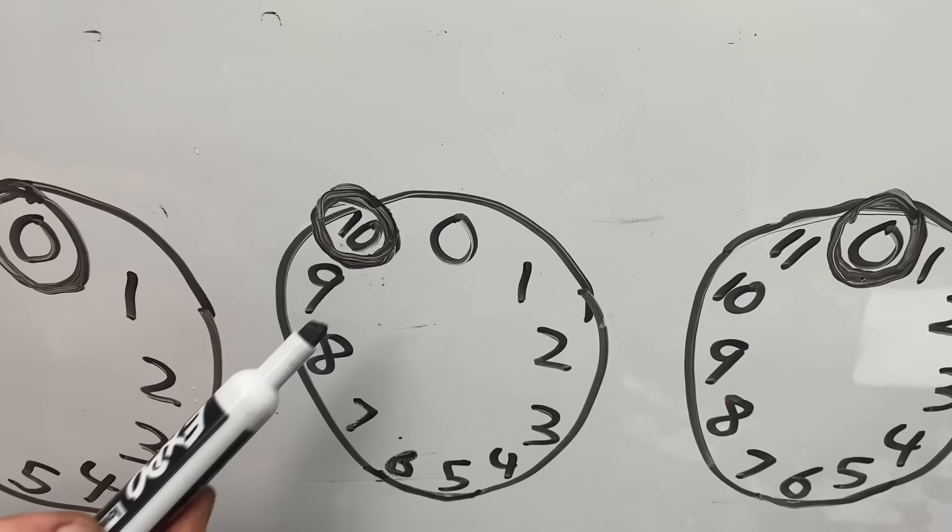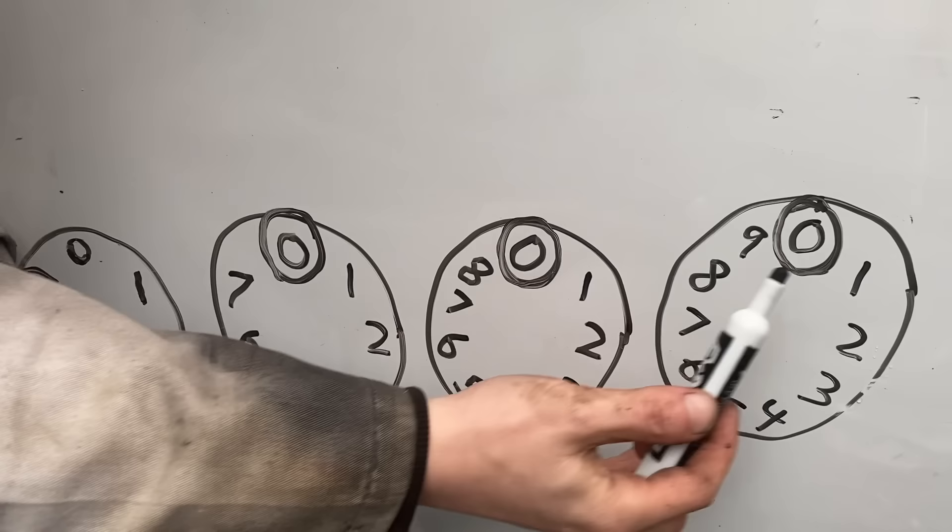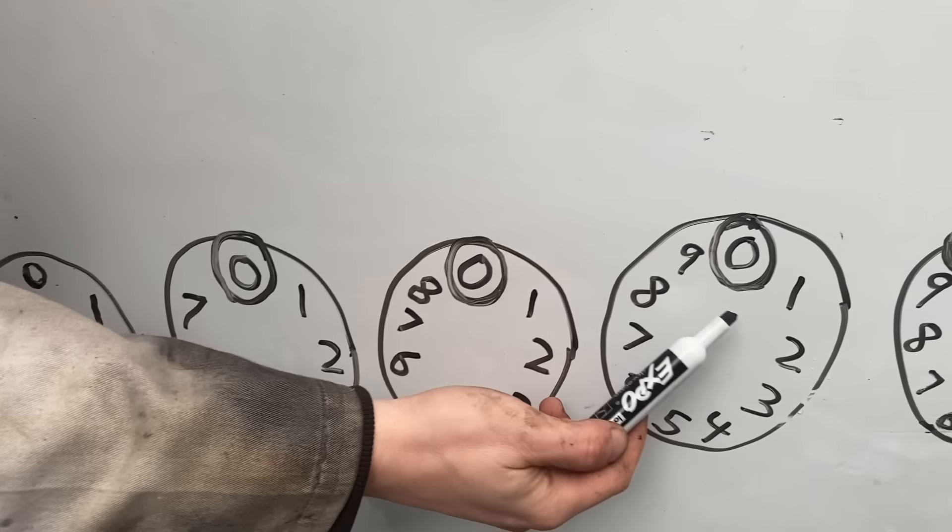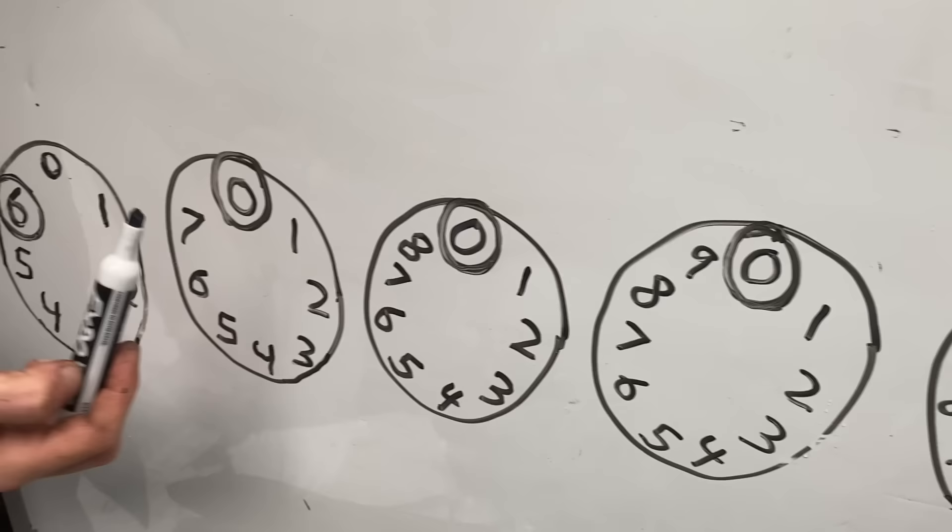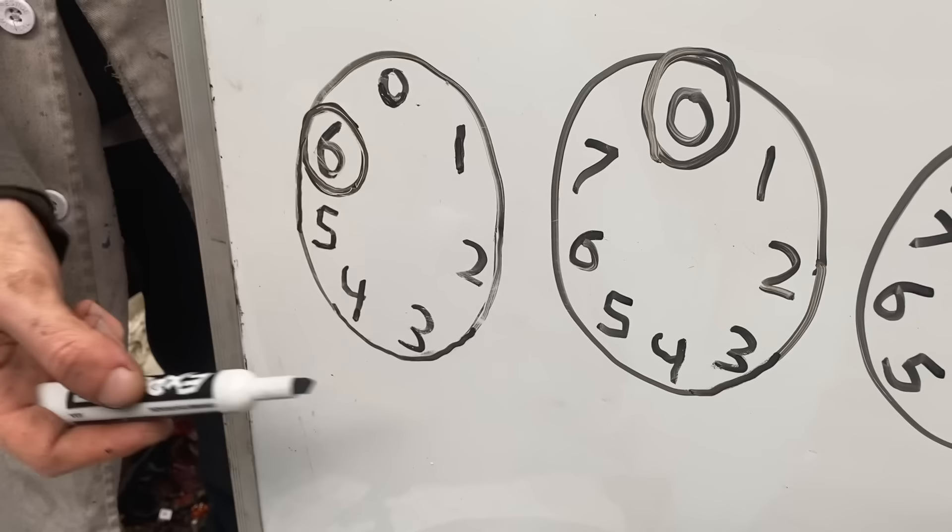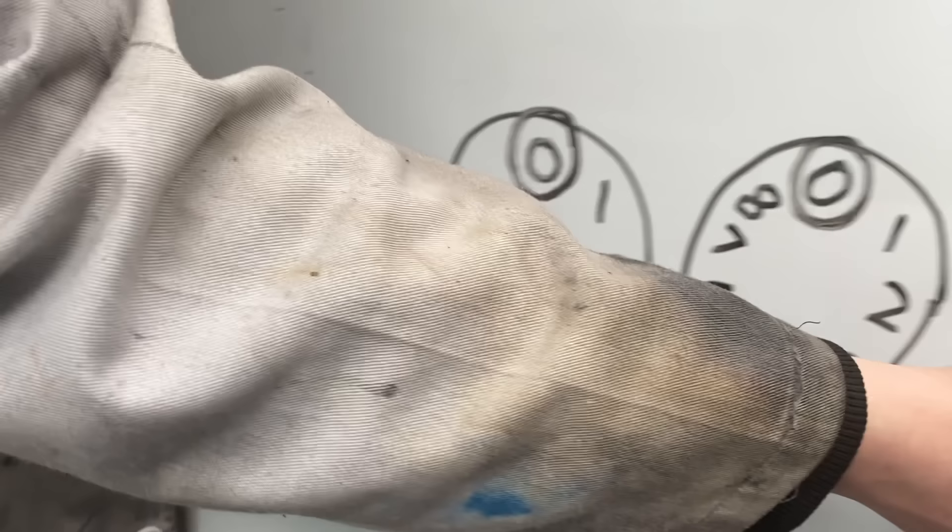On the 10-hour clock and the 9-hour clock and the 8-hour clock, if we went forward the factorial of the largest number we see, which is the number one less than the total amount of hours, we would end up back on the zero we started on. But on the 7-hour clock, if we started on the zero and added 6 factorial hours, we'd end up on the 6.